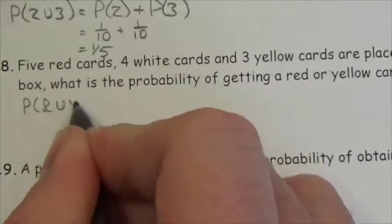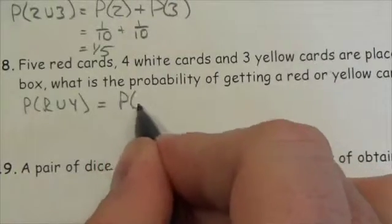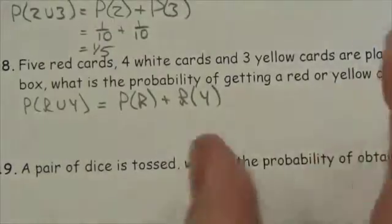So the probability of a red or a yellow card. Now again we're assuming that these are mutually exclusive events that you can't get a card that is red and yellow.